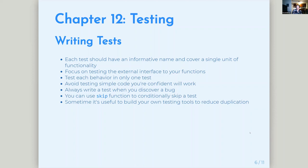One interesting recommendation — and they didn't really expand on it much — is to avoid testing simple code because it will work. And always write a test when you discover a bug. If you're working on your code and notice something's off, immediately write a test so that if it comes up again, you catch it before it becomes a bigger problem for your users. There are also skip functions that allow you to conditionally skip a test, including skip_on_cran(), which you can add if you don't want tests run on CRAN.